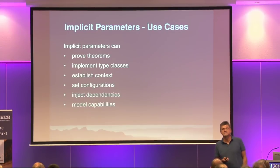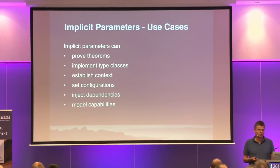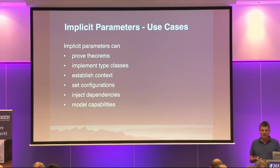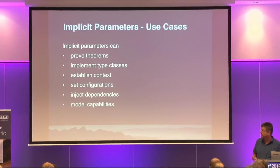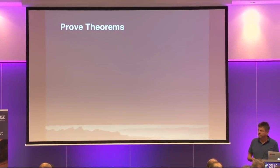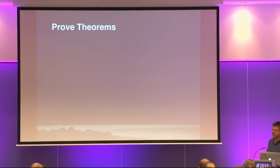So, implicit parameters have a surprisingly large and diverse number of use cases, and I want to walk you through some of them. In short, we can prove theorems, implement type classes, establish context, set configuration, inject dependencies, model capabilities, and several others more. Let me start with something fancy — proving theorems.